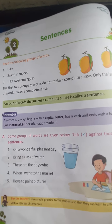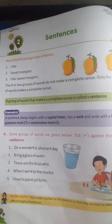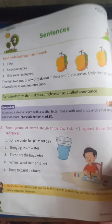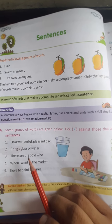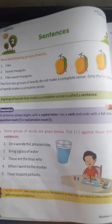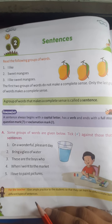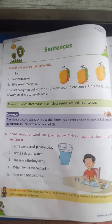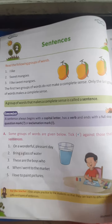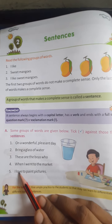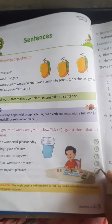Second: 'Bring a glass of water.' It is looking like a sentence but it is not a sentence because here there is no full stop. So we will cross it. Next: 'These are the boys who' — is it a sentence? No. 'When I went to the market' — no, it is not a sentence. 'I love to paint pictures' — yes, it is a sentence. Why? It starts with a capital letter, it has a verb, and ends with a full stop. We will put a tick here.